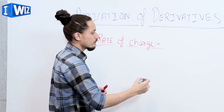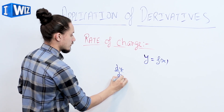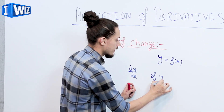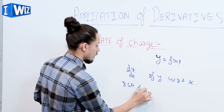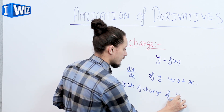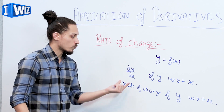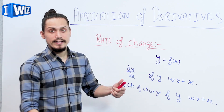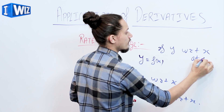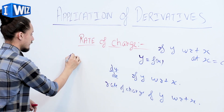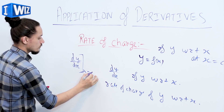So we know that if y equals f(x) is a function, then dy/dx is the derivative of y with respect to x. We can also read it as the rate of change of y with respect to x. And if I have to write the rate of change of y with respect to x at x equals c, I'll write dy/dx at x equals c.